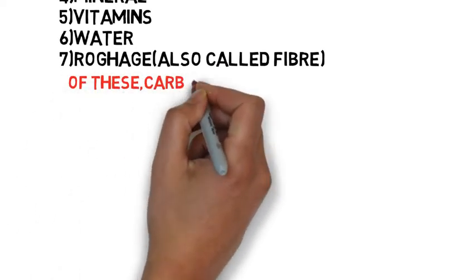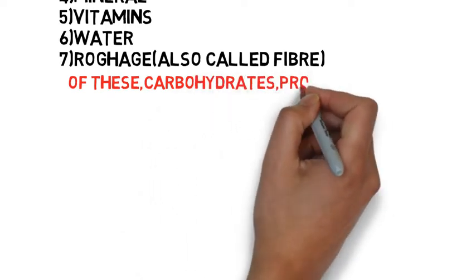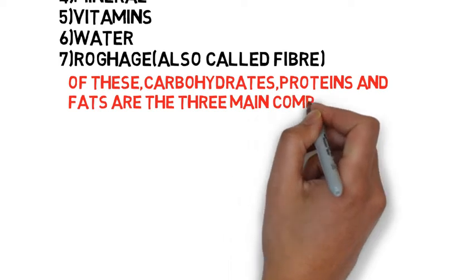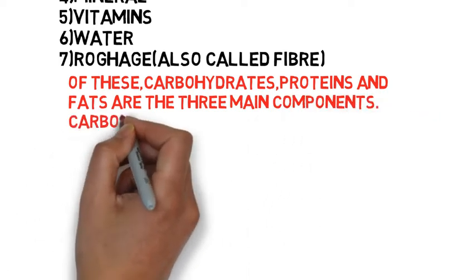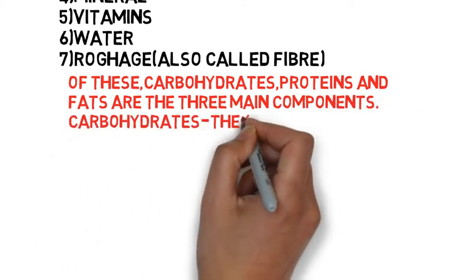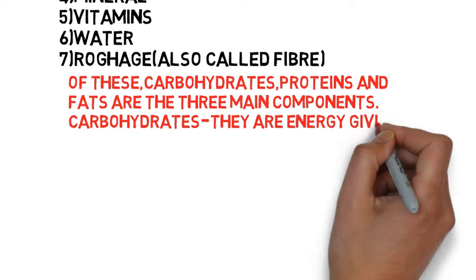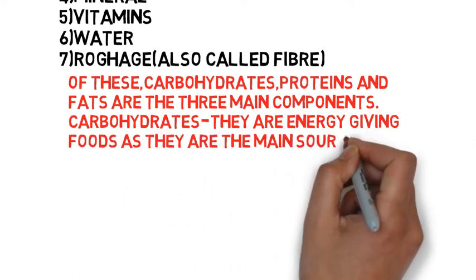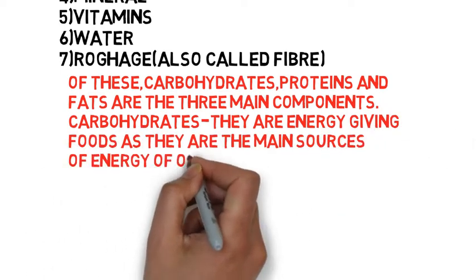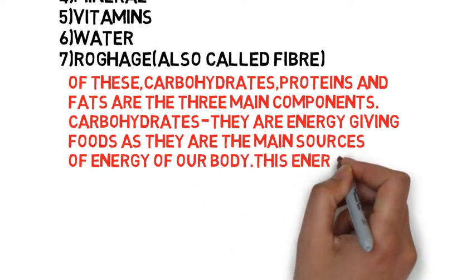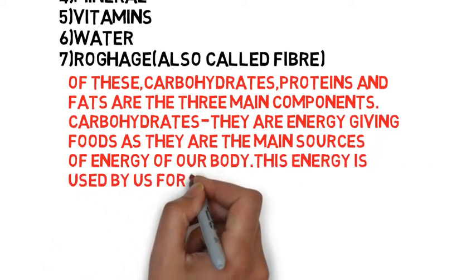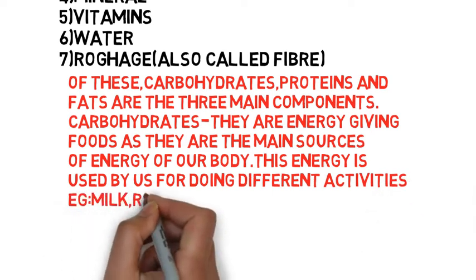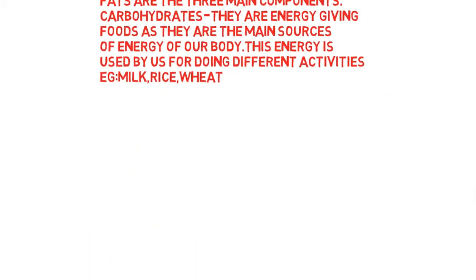Of these, carbohydrates, proteins and fats are the 3 main components. Carbohydrates are energy-giving foods as they are the main sources of energy for our body. This energy is used for doing different activities. For example, milk, rice, and wheat.